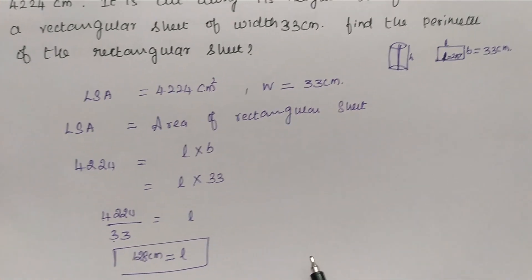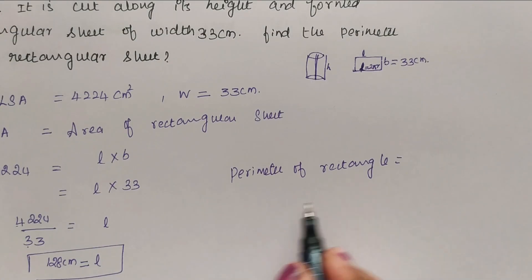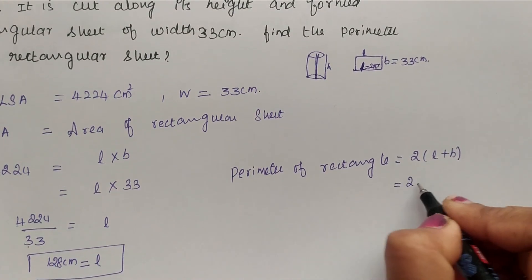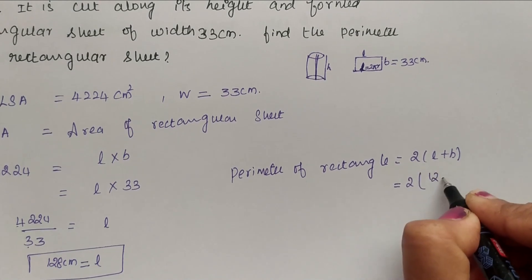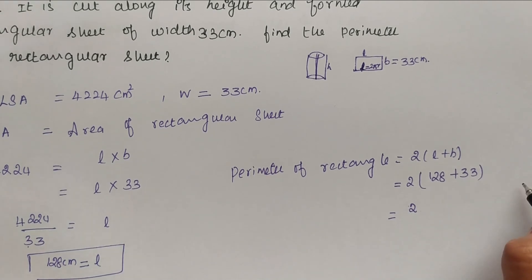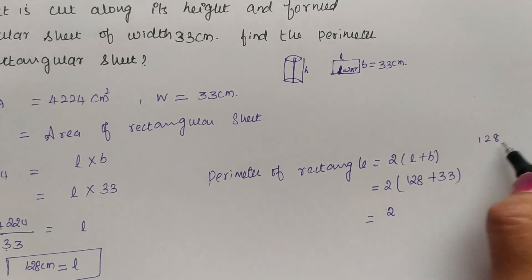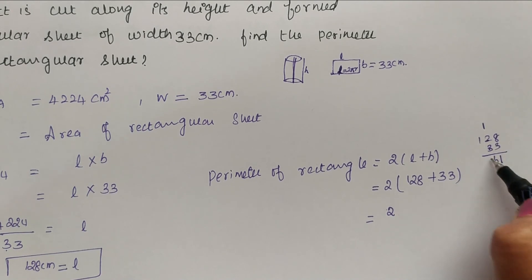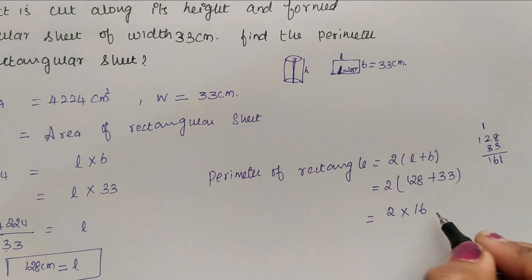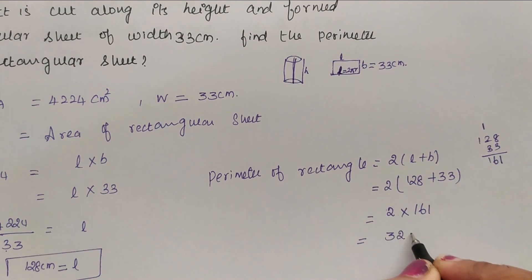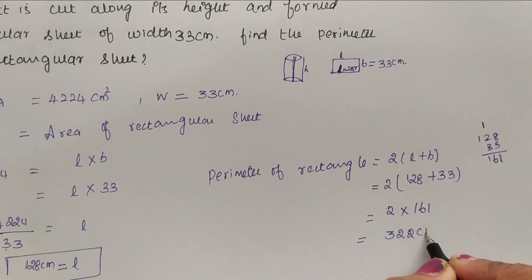Now we have to find the perimeter of the rectangle. Perimeter of the rectangle is equal to 2 into L plus B formula. 2 into length is 128 plus breadth is 33. Now 2 into 128 plus 33, 8 plus 3, 11. Remaining 1, 3 plus 2, 5, 5 plus 1, 6, 161. 2 into 161 is 322 centimeter.